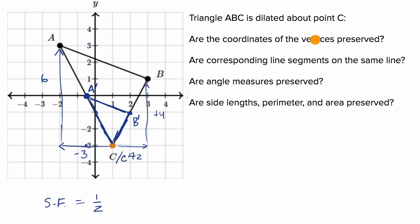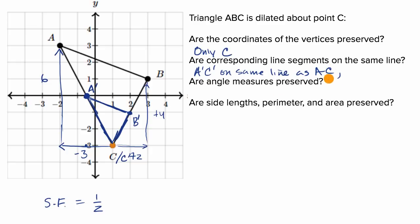Are the coordinates of the vertices preserved? Only C is preserved — the others are not. The only reason C was preserved is because it's the point we're dilating about. Are corresponding line segments on the same line? Segment A prime C prime is on the same line as AC, and segment B prime C prime is on the same line as BC — because we're dilating about a vertex. However, segment A prime B prime is not on the same line as AB; it is parallel to it, but not on the same line.